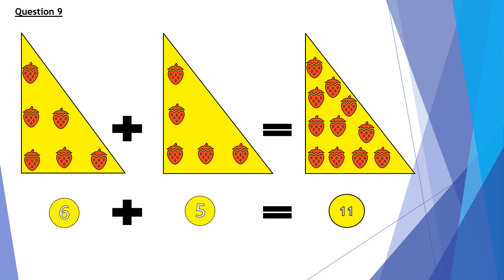Question 9. 6 strawberries plus 5 strawberries equals 11 strawberries. So in the number form, 6 plus 5 equals 11.